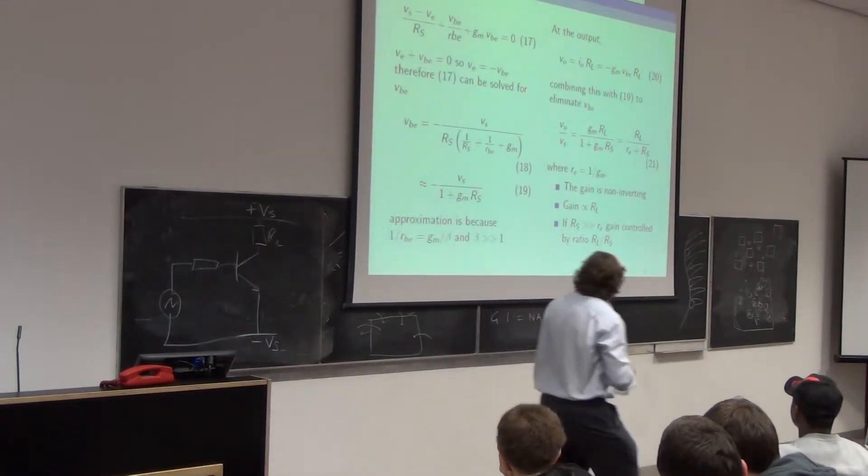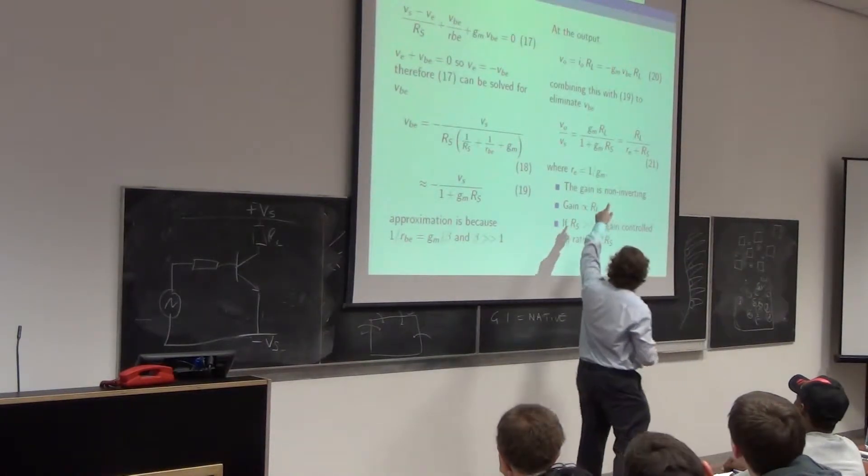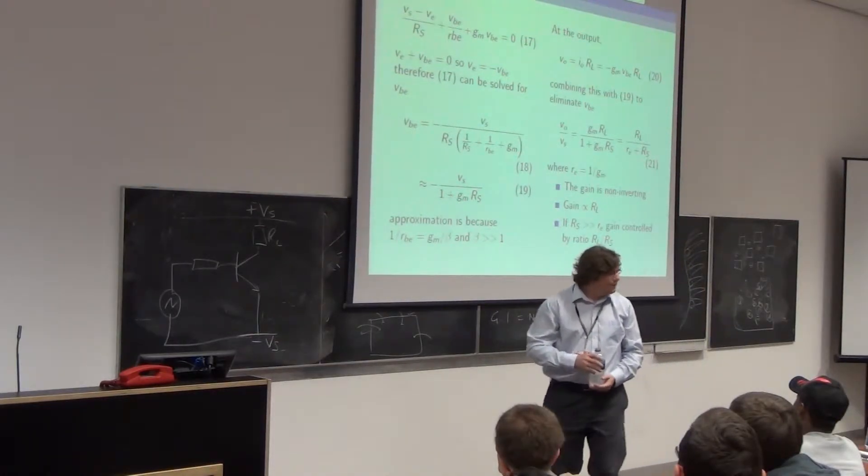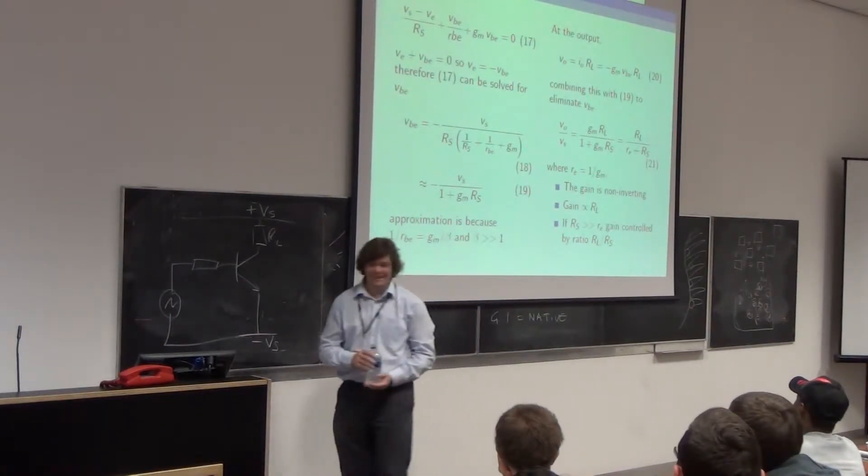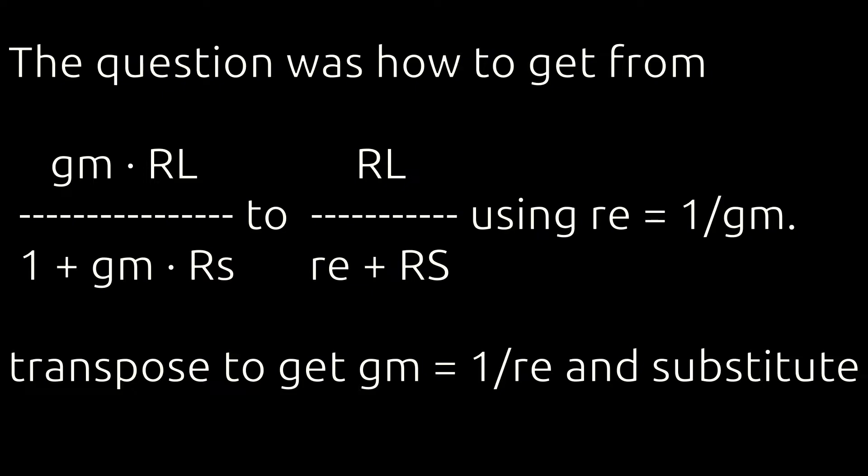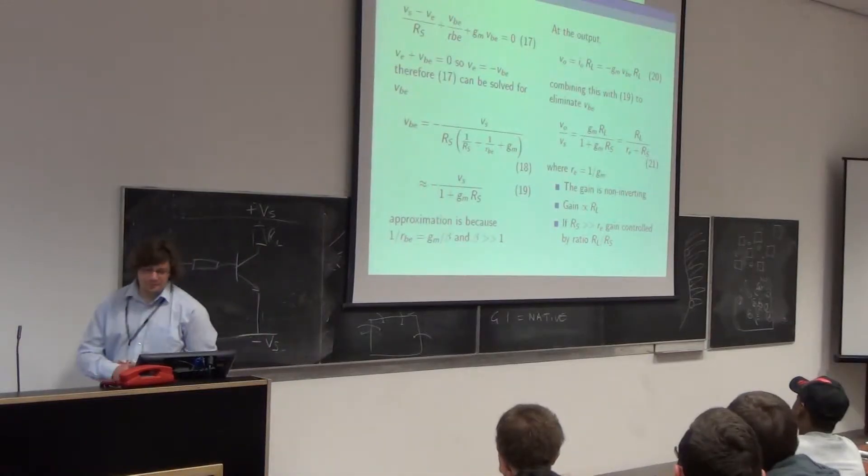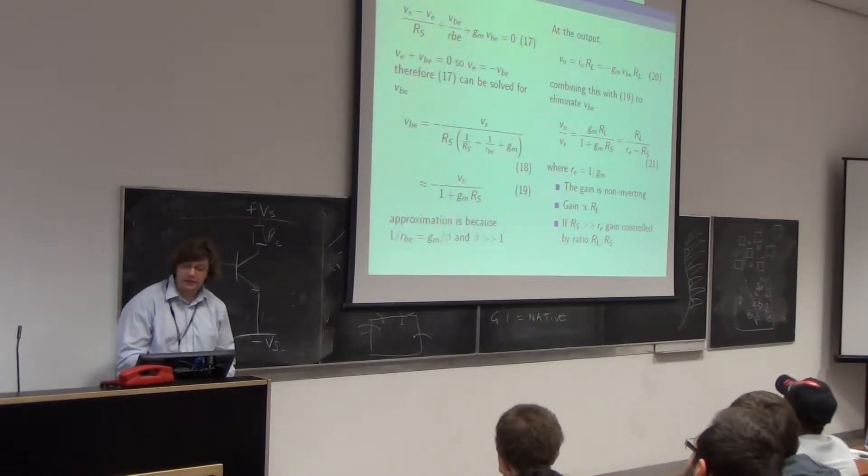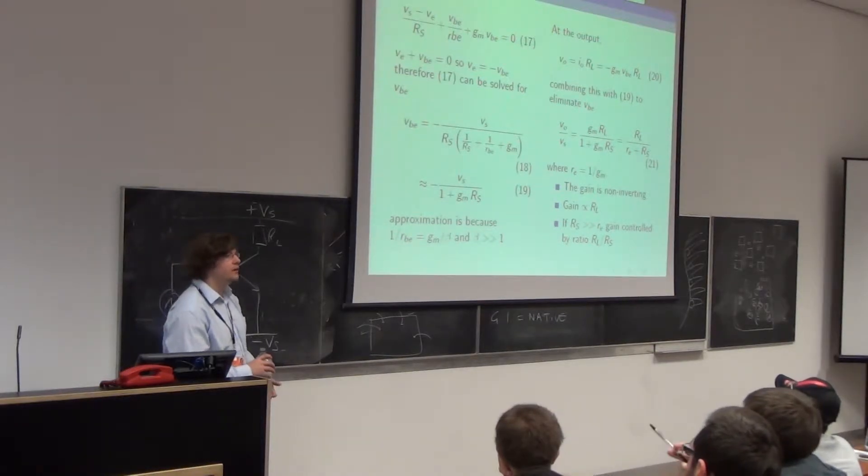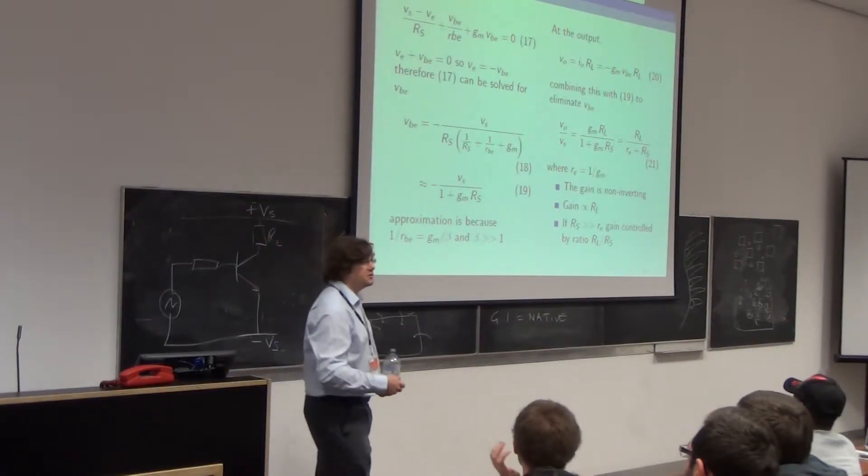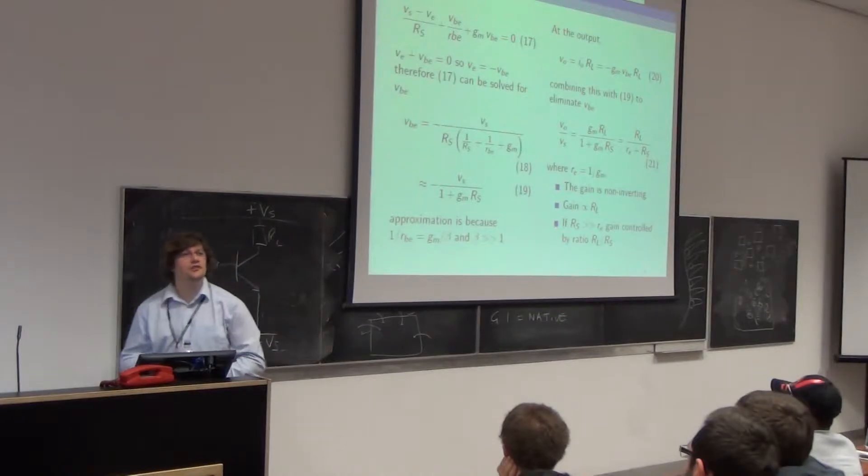Anyway, if we look at the output circuit, we know that VO is I out times RL. We just apply Ohm's law to the load resistor. And we can say that must be equal to minus GM VBE RL. Because I out is equal to GM VBE with a minus sign in front. Because we've only got one current source. So whatever current flows in the control current source must be the current that flows in the load resistor. And we can put the approximated version of 18, which is 19 into 20. And we'll get rid of VBE. Always trying to get rid of VBE. Got a real grudge against it. So VO over VS is what we're solving for because that's the voltage gain, which is the parameter we're interested in right now. And it will turn out that it's GM RL over 1 plus GM RS. And if we say that little r little e is 1 over GM, which I will prove in a bit, maybe, we can rewrite that as RL over RE plus RS.